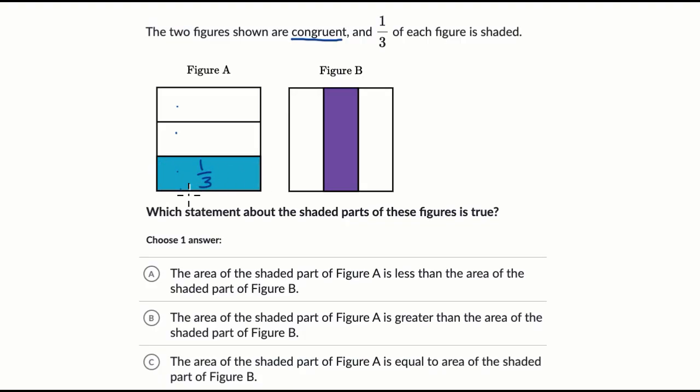So that makes sense that that's one-third. Now in Figure B, they divided it vertically, but once again, it's three equal sections and exactly one of those three equal sections is shaded in. So once again, that is one-third.